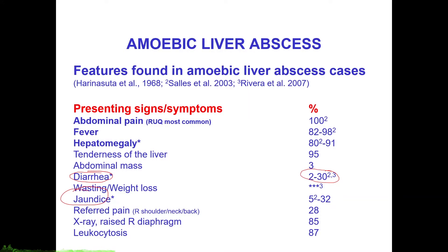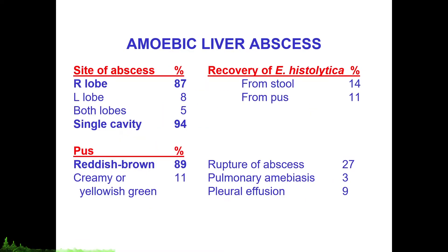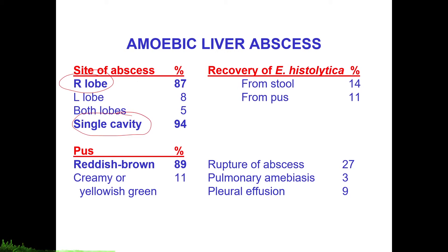Hepatomegaly is the most important physical sign in hepatic amoebiasis. Abdominal pain, fever, and hepatomegaly would be your triad for suspecting amoebic liver abscess. The usual site of amoebic liver abscess is the right lobe, and it usually manifests as a single cavitary lesion. A number of small necrotic foci form, which enlarge and coalesce into one big abscess. Multiple abscesses may be present, but rarely.